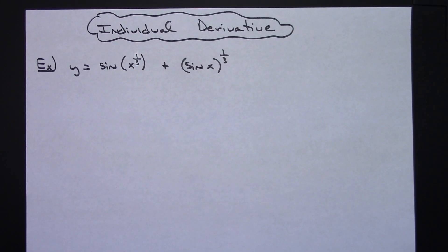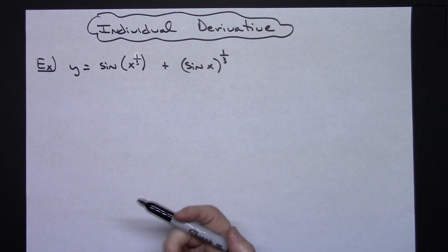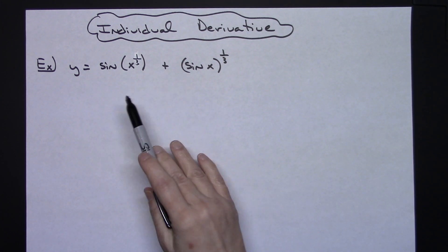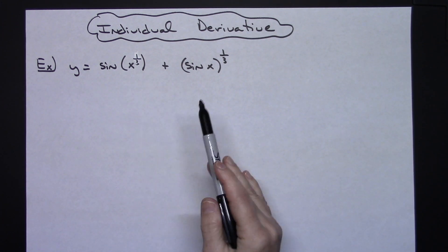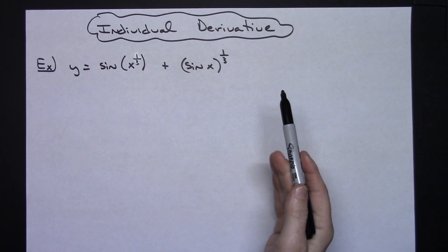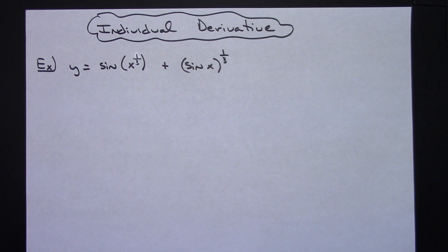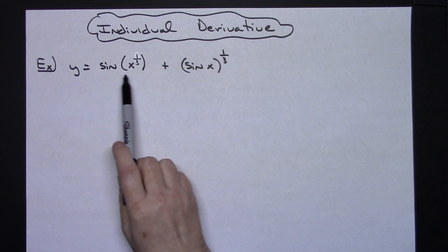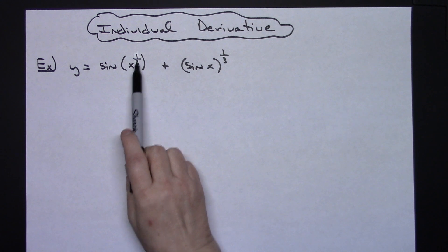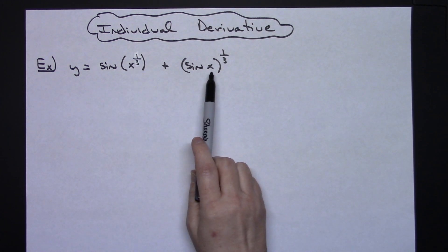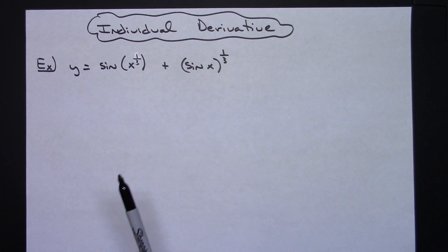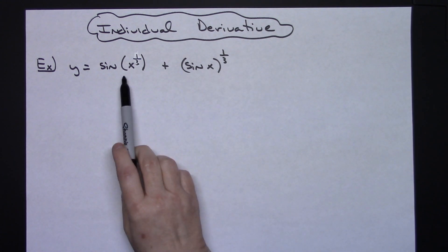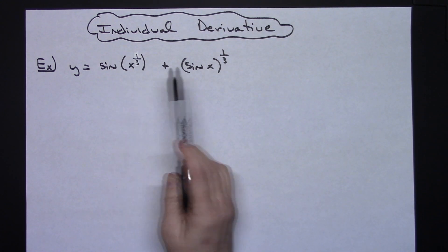In this video I'm going to be working out an individual derivative — it is going to be a trig derivative involving chain rule and some power rule. We've got y equals the sine of x to the 1/3rd, plus sine x raised to the 1/3rd.